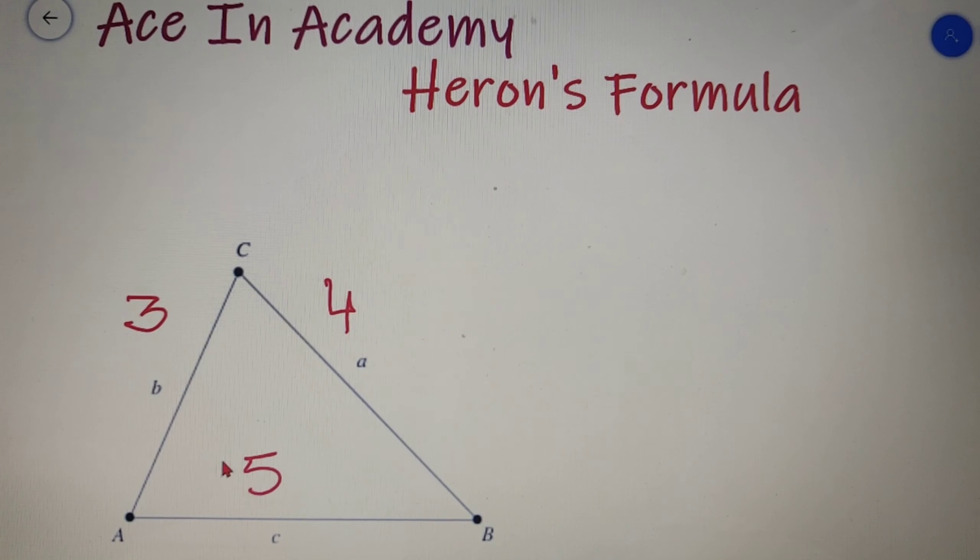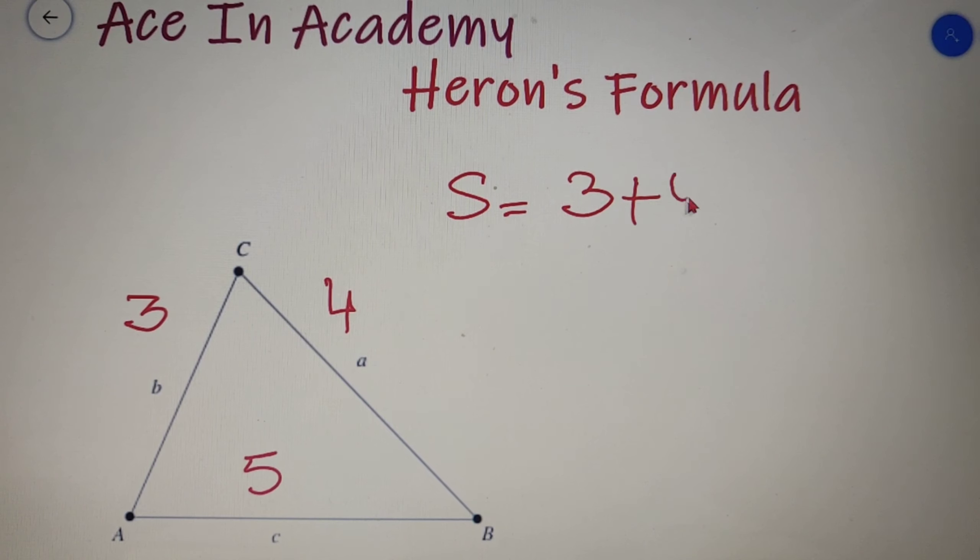Taking an example, suppose we have this triangle having the sides as 3, 4, and 5 units respectively, and according to our question we have to find the area of this triangle. So firstly we have to find the semi-perimeter. S is equal to 3 plus 4 plus 5 whole divided by 2, which is equal to 6 units.